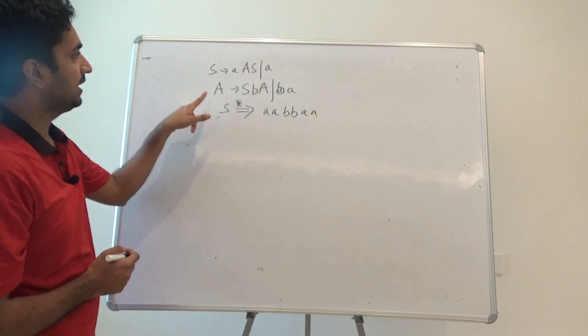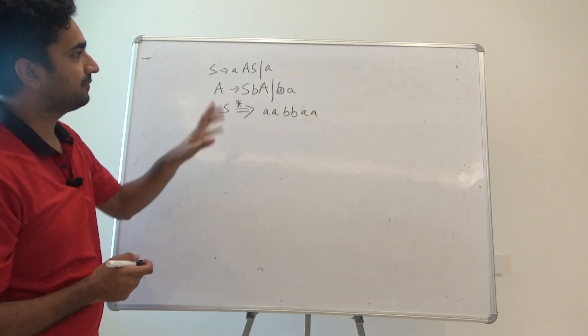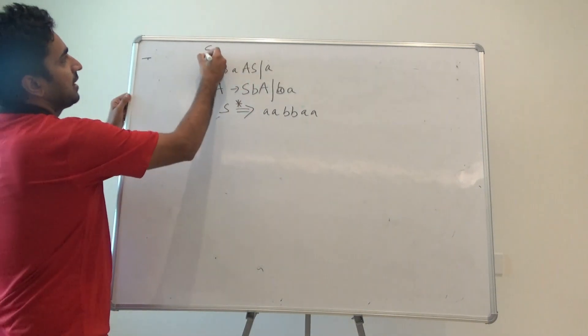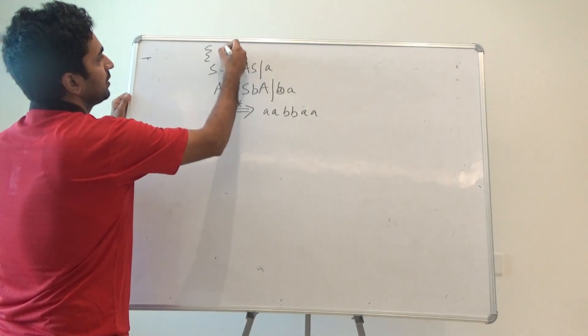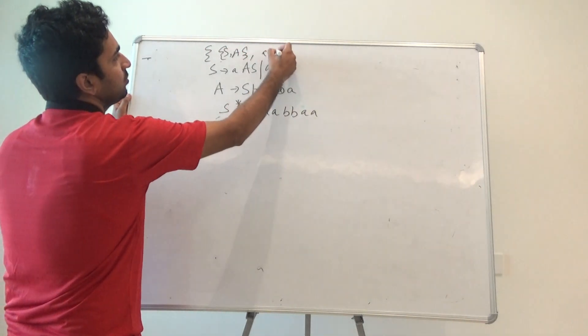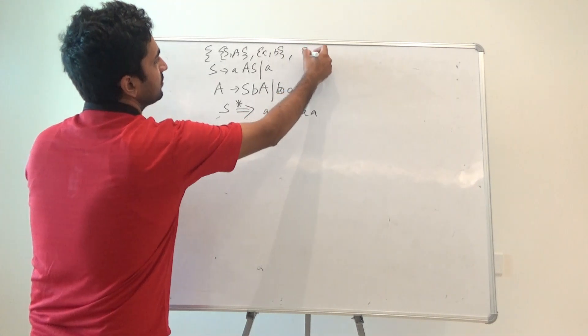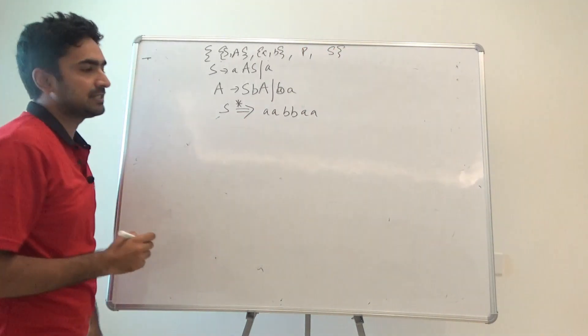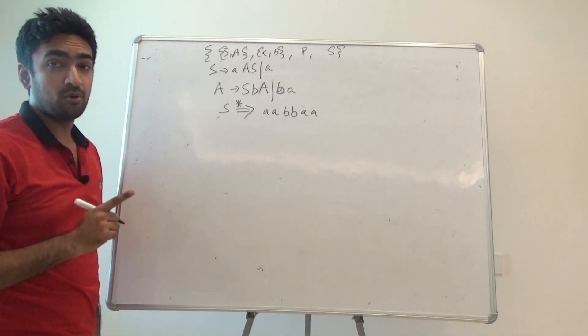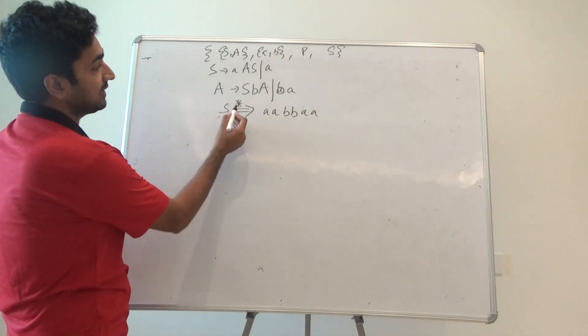...A. A is generating SbS and ba. Obviously, this grammar has two non-terminals and two terminals, and these are our production rules given, and S is our starting symbol.